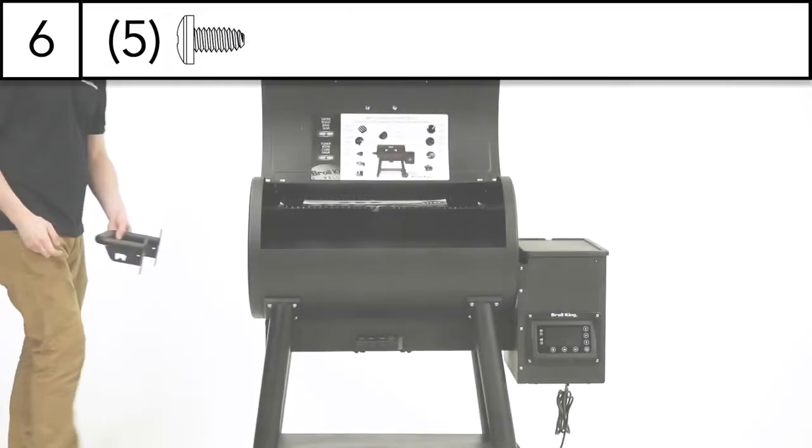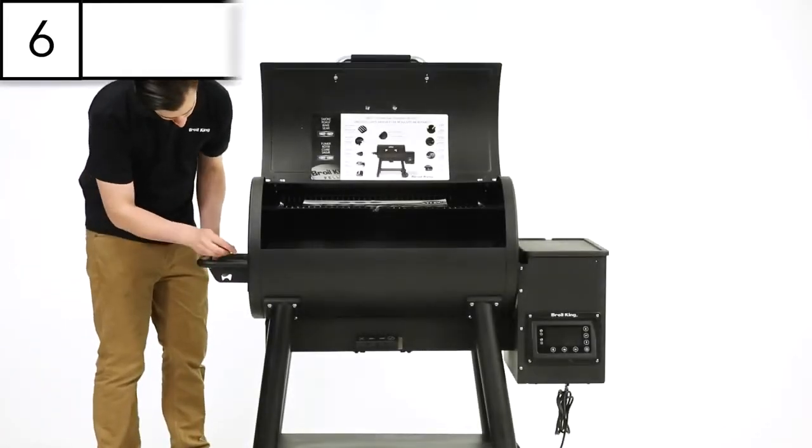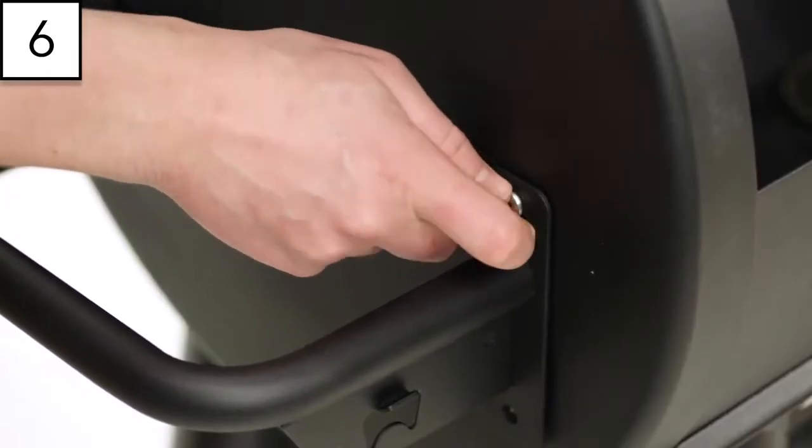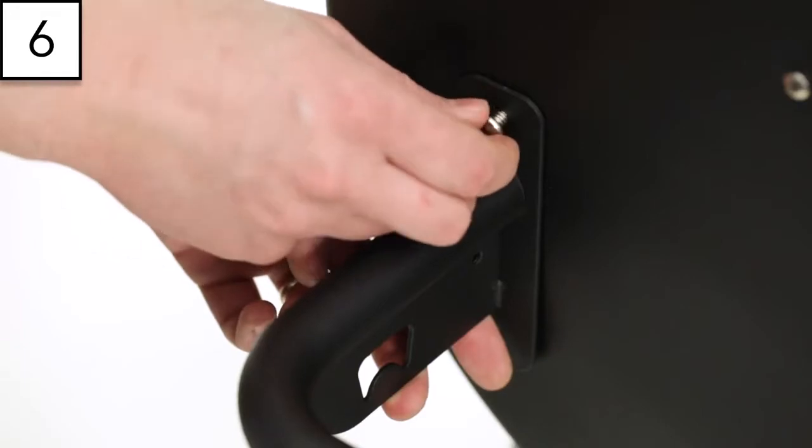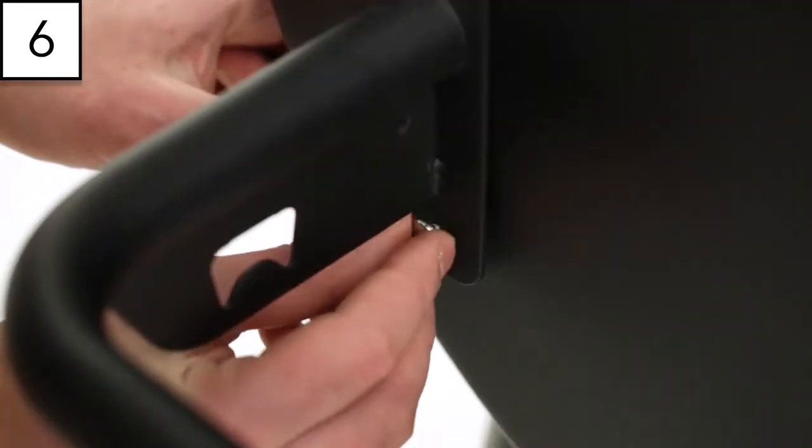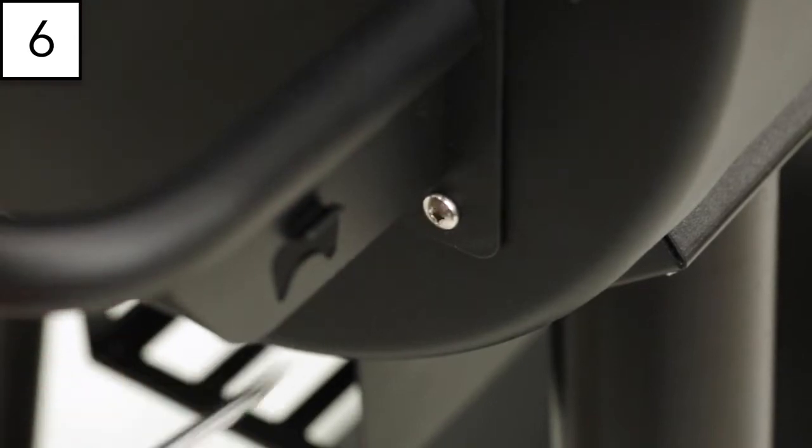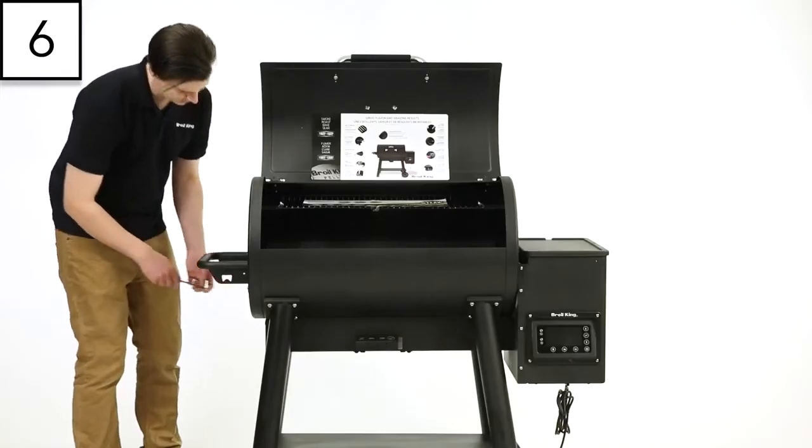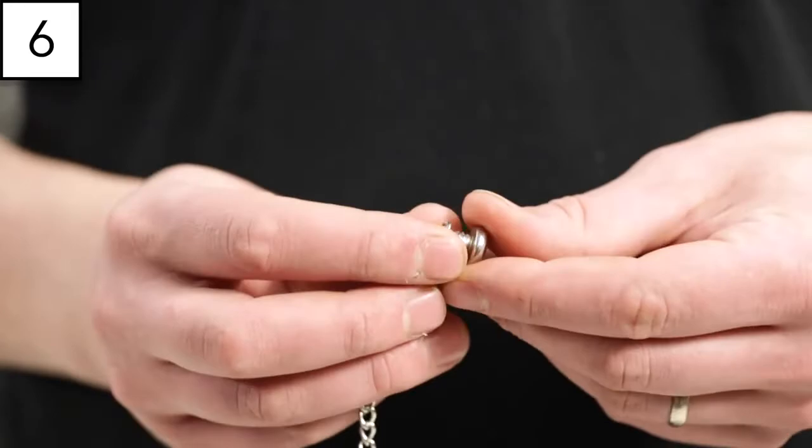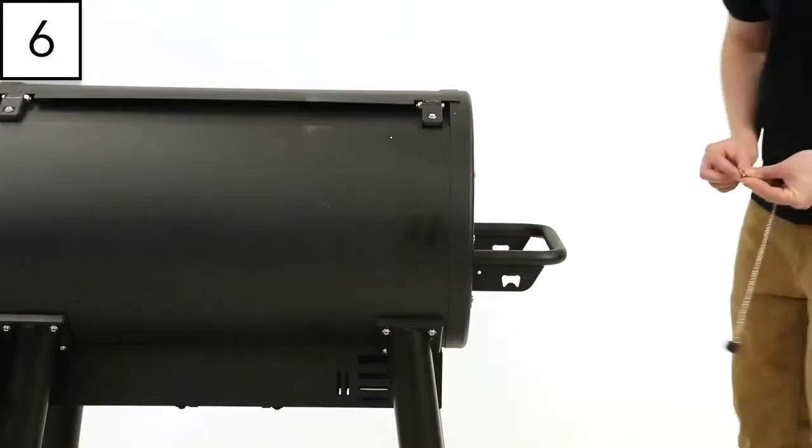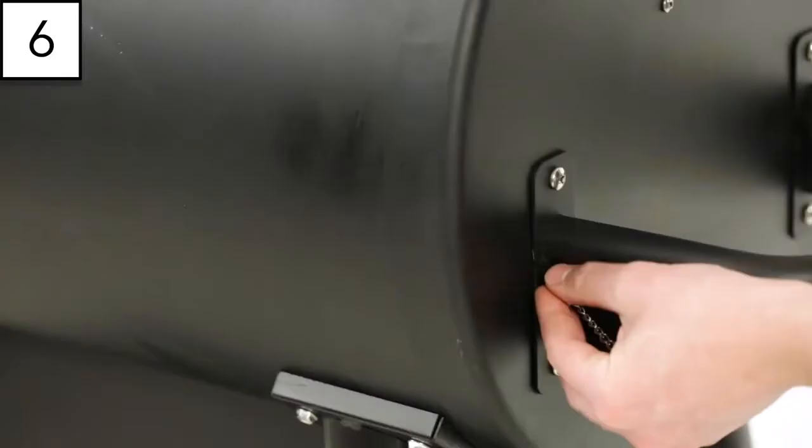Step 6. Install the side handle assembly. Secure in place with four screws. Tighten with your screwdriver. Install the rotisserie cap chain on the side handle assembly. Now tighten.